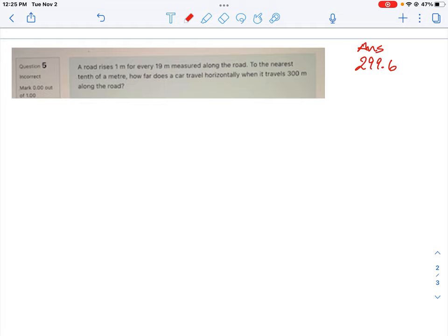So it says here a road rises one meter for every 19 meters measured along the road. Then to the nearest tenth of a meter how far does the car travel horizontally if it travels 300 meters along the road.